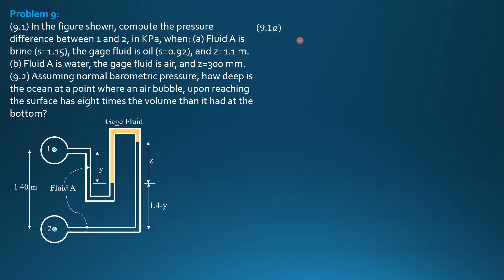this is equal to 1.4 minus Y because the vertical distance between points 1 and 2 is 1.4. So, beginning with 1, the pressure is P sub 1. Then, it is the same here, same level. We go down. So, plus specific weight of fluid A. We'll just call that gamma A times Y.